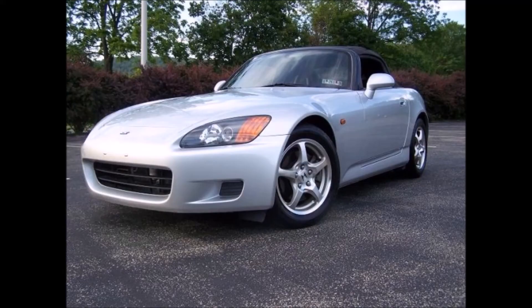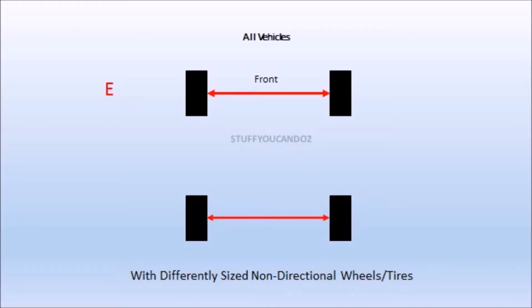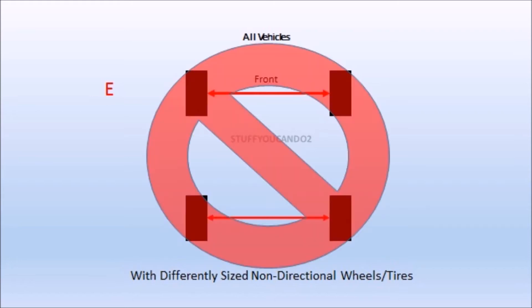There's also a couple special cases we need to address. Some vehicles like the S2000 pictured come with different sized front and rear wheels. In this case, and also assuming non-directional wheels and tires, you can only move the tires side to side. If the vehicle has different front and rear tire sizes and directional wheels or tires, you can't rotate at all.